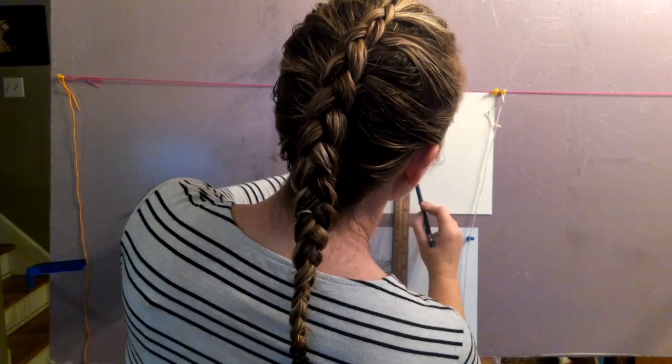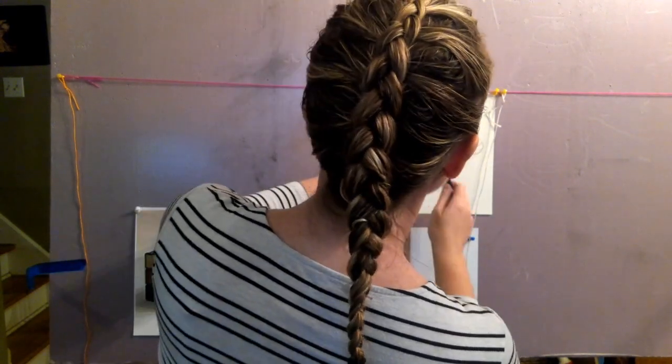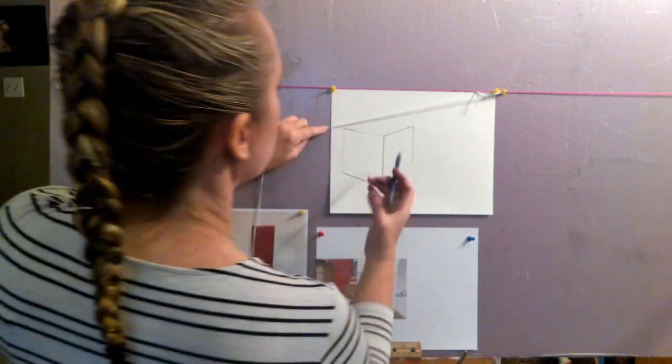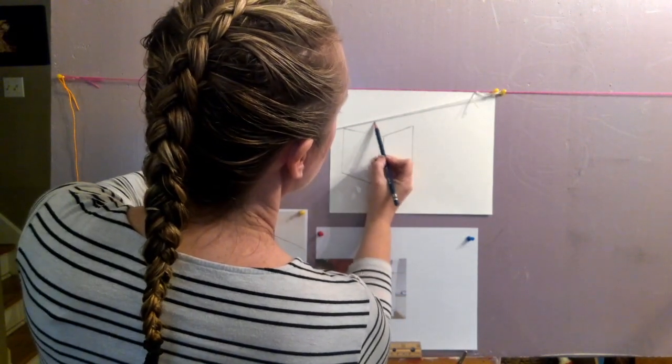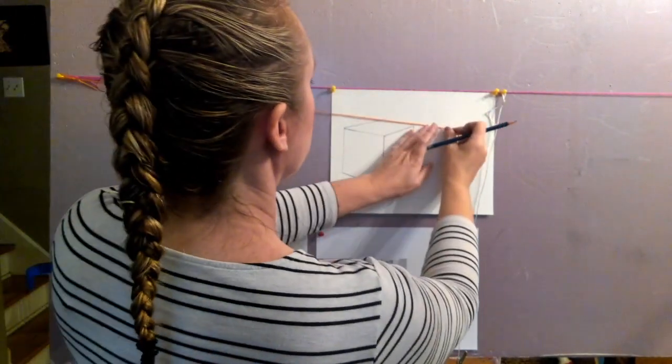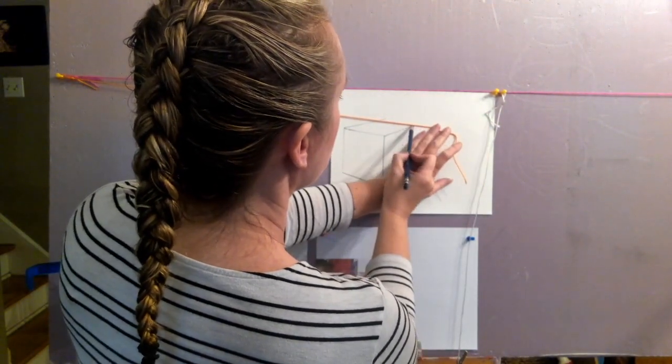I'm not going to draw that corner very dark because it's going to be overlapping. The other shape is going to be overlapping it. So I need to know where that corner is in order to finish the Rubik's Cube.